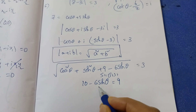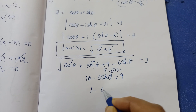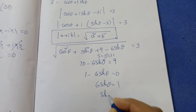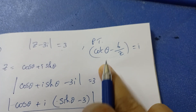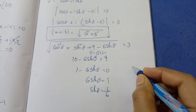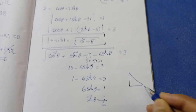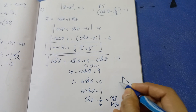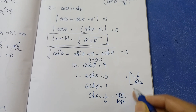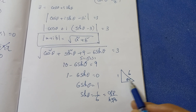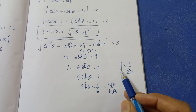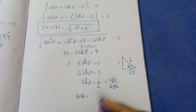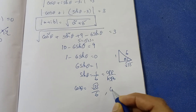Squaring both sides: 10 − 6sinθ = 9, giving 6sinθ = 1, so sinθ = 1/6. Now I draw a right triangle: opposite side = 1, hypotenuse = 6. The adjacent side = √(36 − 1) = √35. Therefore cosθ = √35/6.